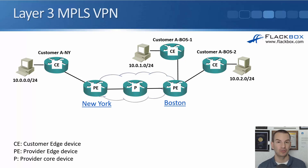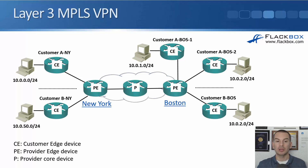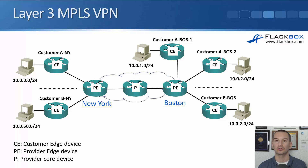The example shown here is for a Layer 3 MPLS VPN. You can also get Layer 2 VPNs, which we'll get to in a minute. For Layer 3 VPN, the customer sites are all in different IP subnets. We can also have Customer B, who also have a VPN going over that same shared core infrastructure. Customer B has an office in New York on subnet 10.0.50.0 and an office in Boston on subnet 10.0.2.0. Notice that both Customer A and Customer B have sites using the same subnet — 10.0.2.0. That's fine because the different customers are kept strictly separate with separate routing tables.